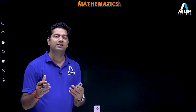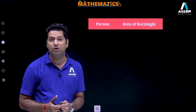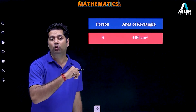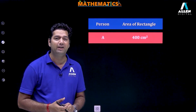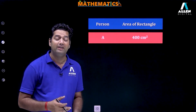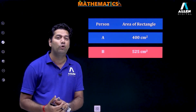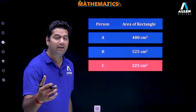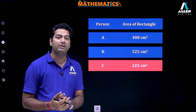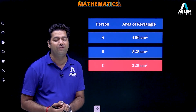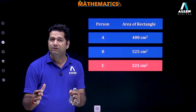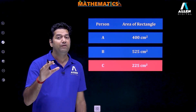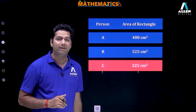Now, if we discuss the area formed by all three of them: by the first one, area is equal to 400 centimeter square; second one, area of rectangle is equal to 525 centimeter square; and by the third one, area of the rectangle formed is equal to 225 centimeter square. And if this task is allotted to other people also, then we can calculate the area in the same manner.